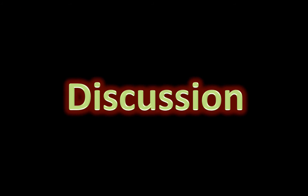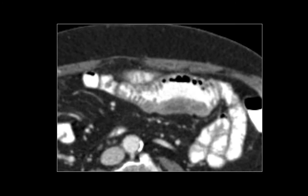Now let's go to the discussion of these findings and see what we could get out of this case. As mentioned, the abnormal finding is a short segment of distal small bowel mural thickening. However, what's very striking in this case is that the lumen is not narrowed and appears paradoxically dilated despite the mural thickening.